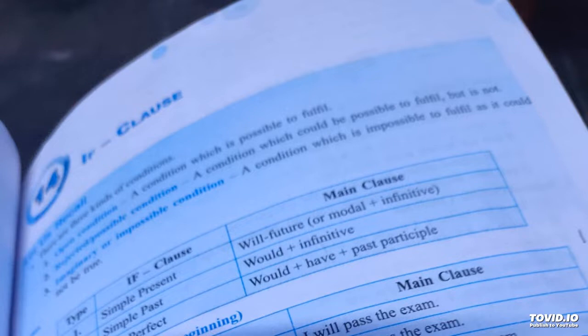Fill in the blanks with the correct form of the verbs in the bracket. If you see Ritu, you will give my love to her. If it rains, there will be no play.